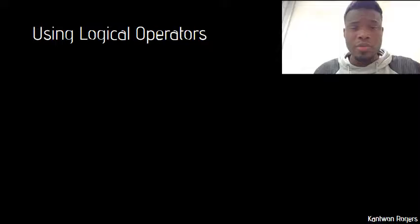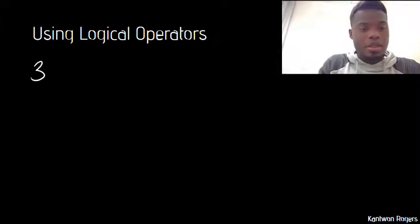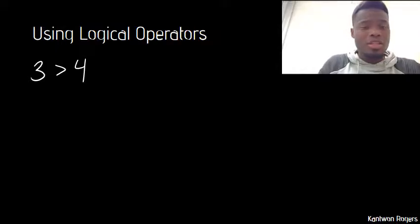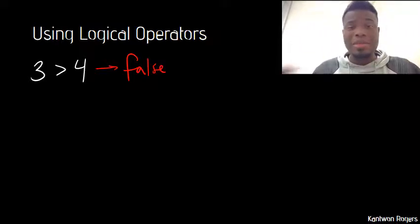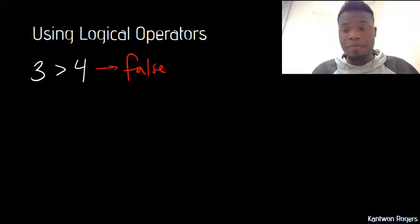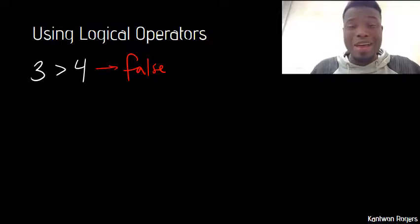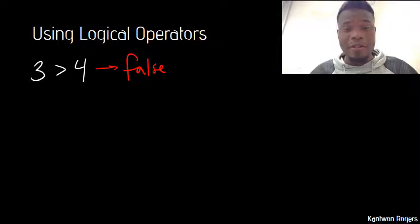Let's see how these logical operators work. Many of them you're probably already familiar with, like greater than and less than. For example, 3 greater than 4 — clearly 3 is not greater than 4, so this evaluates to false. The operators that might be new are AND and OR. To understand them, we'll write out a truth table, which is a series of all the different combinations of input values and their corresponding outputs based on the operator you're using.